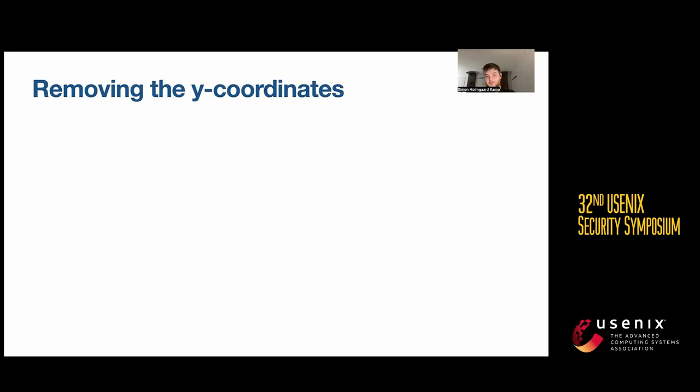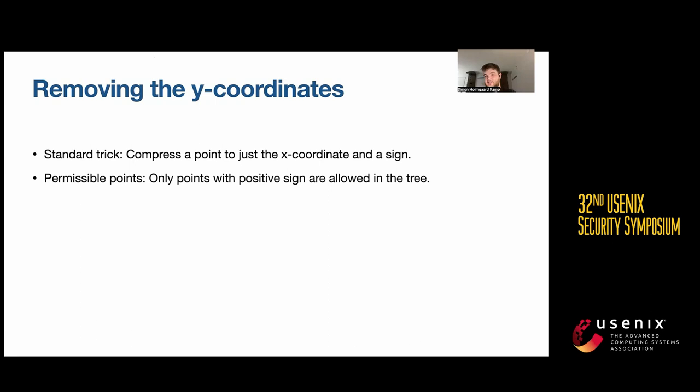The standard trick in this case is to say that we just have the X coordinate and then a sign, if you want to compress an elliptic curve point. It would make sense to say that we only allow points with a positive sign in the tree, so you don't need to store the sign even.